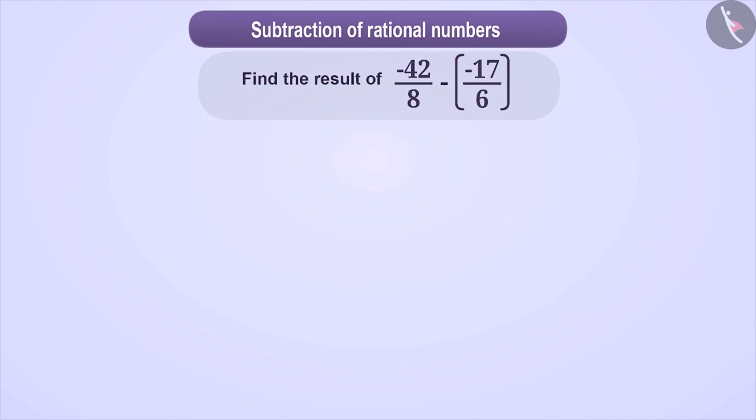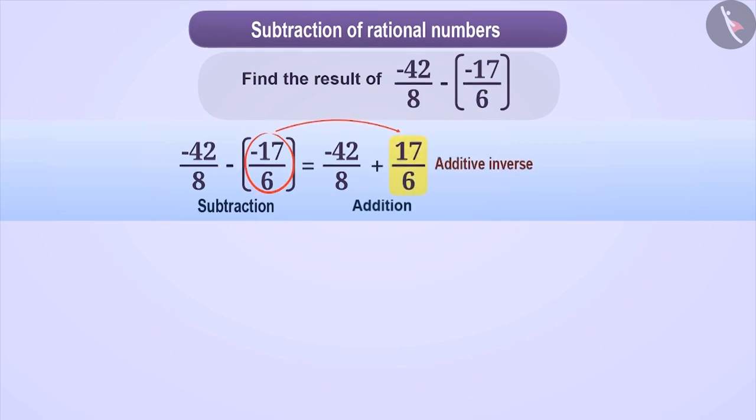So let's find the result of the subtraction. First, we convert the operation of subtraction into addition. For this, we write the first number as it is then change the sign of the subtraction to addition and then write the additive inverse of the second number.